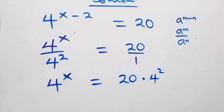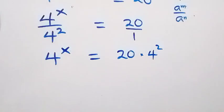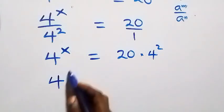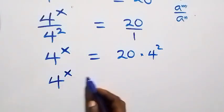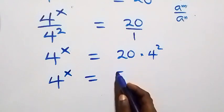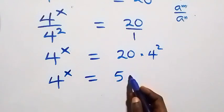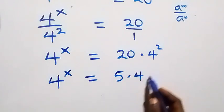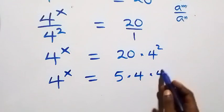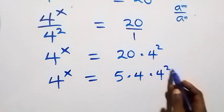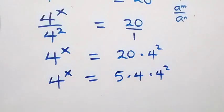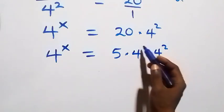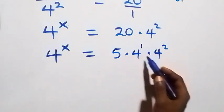Here we can write 4 raised to power x equals 20, and 20 can be written as 5 times 4. Here 4 is the same as 4 raised to power 1, and we have 5 times 4 times 4 squared.